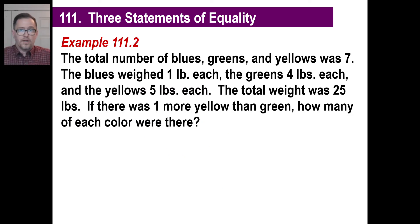Let's go to the other type. It's the same exact thing we need to do. It's not nickels or dimes, it's just straight up different amounts of certain things. The total number of blues, greens, and yellows was seven. Well, that's an easy equation. Blues plus greens plus yellows is seven. The blues weighed one each, the greens four, and the yellows five. The total weight was 25. Same thing as in nickels, dimes, and all that jazz. If there was one more yellow than green.